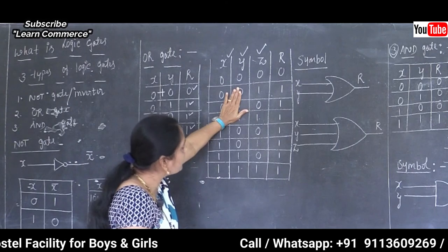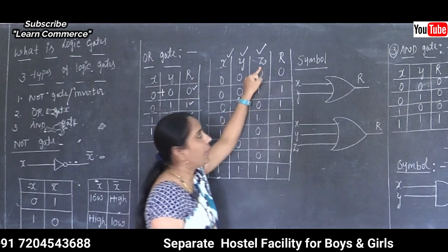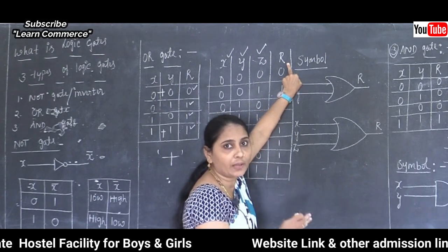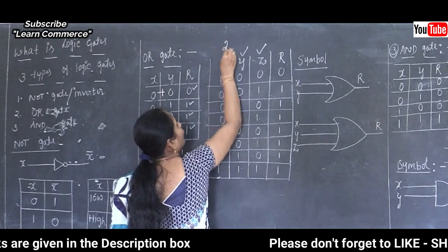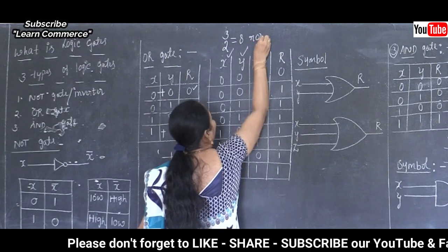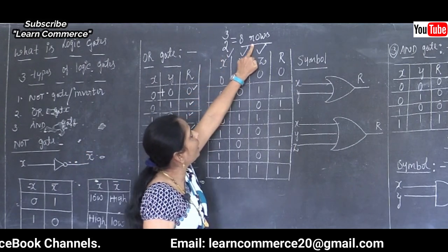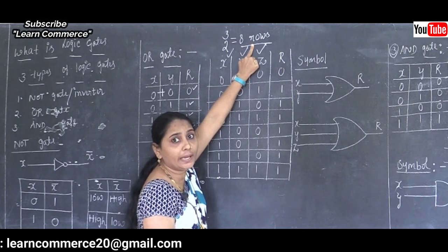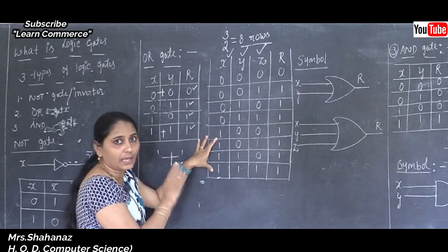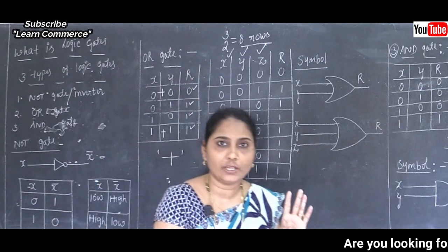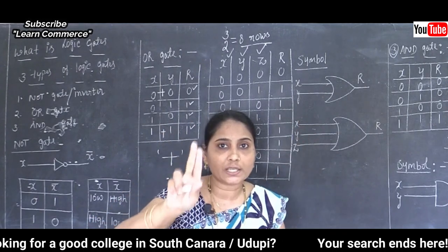For three-input OR gate with variables X, Y, Z: two to the power of three equals eight rows. First column X: four 0s then four 1s; second column Y: two 0s, two 1s, two 0s, two 1s; third column Z: alternating 0, 1 repeated four times.